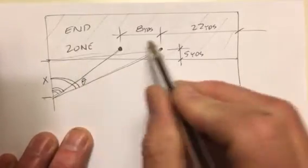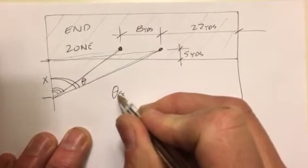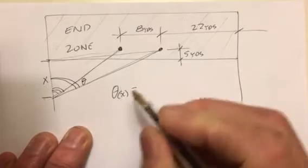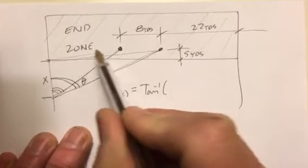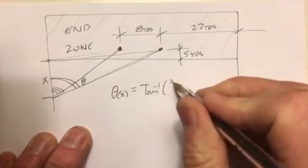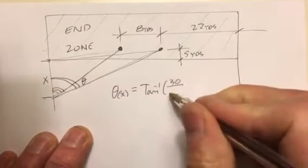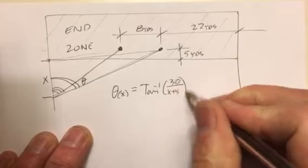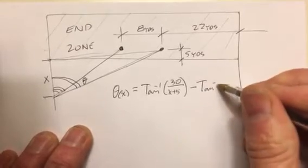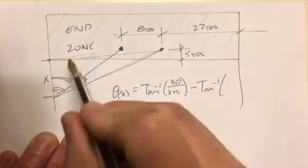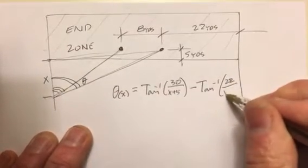Looking at the geometry and the numbers, this angle theta, based on some distance x moving backwards, is going to be the larger angle — the inverse tangent of the opposite length, which is going to be 8 plus 22, that's 30, over this distance, which with that 5-yard setback will be x plus 5. Then we subtract the inner angle, which is again the inverse tangent. In this case it's that shorter distance to the nearest goal post: 22 over that same x plus 5.